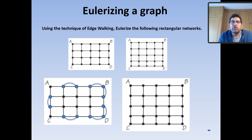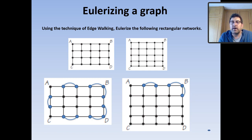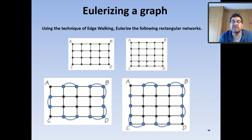Starting at A for the first graph: first odd vertex connects to next odd — both even. Walk to next odd near B — must connect to B which becomes odd, then B connects to the next odd making both even. Next odd connects to D making D odd, D connects to next odd making both even. Continue: odd connects to odd, walk past C, next odd connects to adjacent odd. That graph is now fully Eulerized. For the second graph: similar process — connecting odd pairs systematically around the boundary until all vertices are even valent.